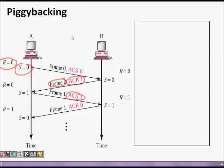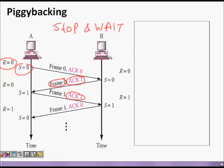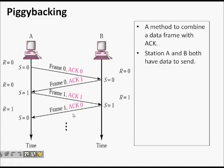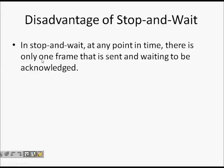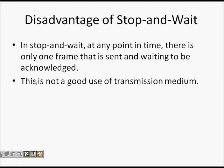Stop-and-wait protocol is good because B only receives data when it is ready to receive it. If the receiver is overwhelmed, it processes the data first and only then sends an acknowledgement. However, there is a problem: at any point in time only one frame is sent and waiting for acknowledgement.